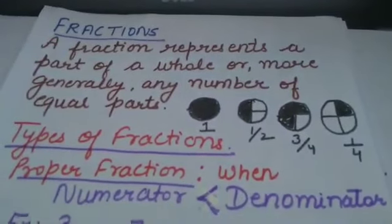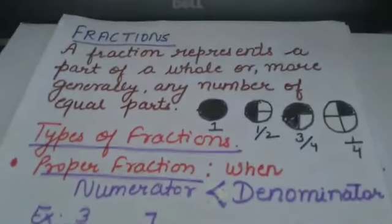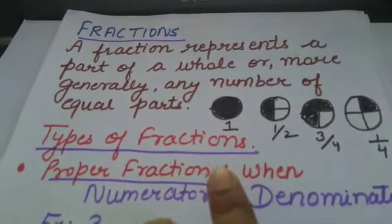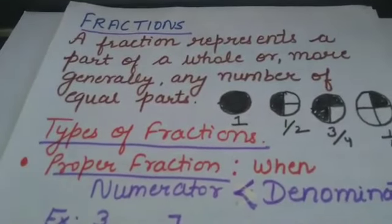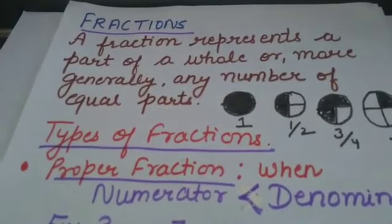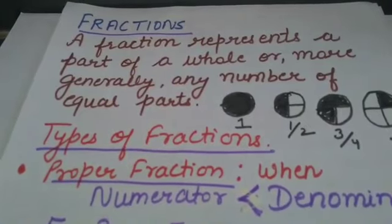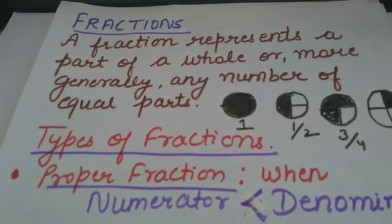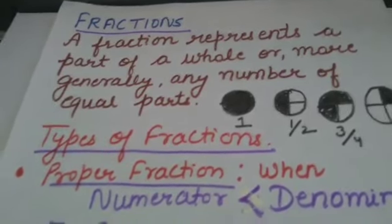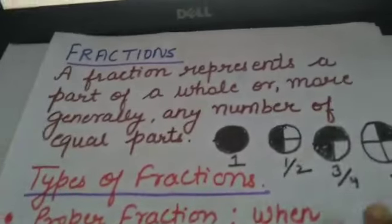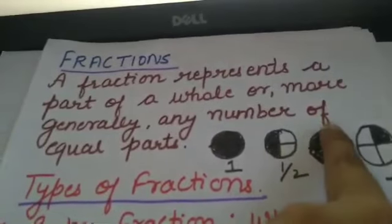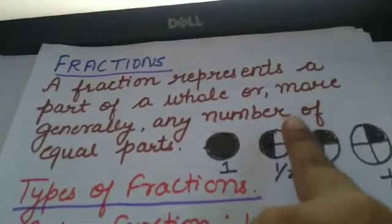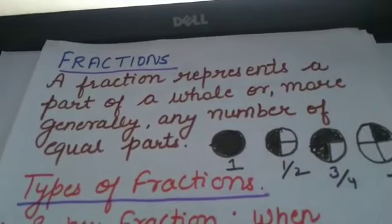Simply, a fraction represents parts of a whole. When something is broken up into a number of parts, the fraction shows how many of those parts you have. Suppose I have broken these and I have 3 shaded parts, so I am writing it as 3 by 4.